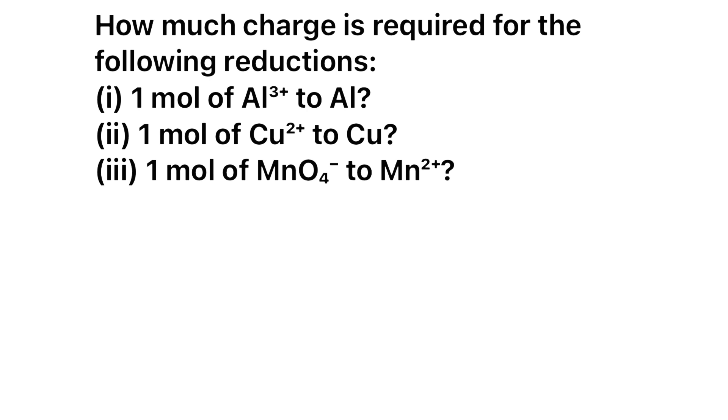For second question, what is the reduction? Cu²⁺ becoming Cu. Now it is very clear, right? How many electrons are involved? 2 mols of electron. From the first question, you understand the concept. Now can you directly say what is the amount of charge? As it is 2 mol of electron, for 1 mol of electron charge is 96500, for 2 mol of electron it is 2 into 96500, and you will be getting 193000 Coulomb.